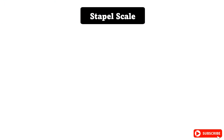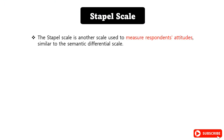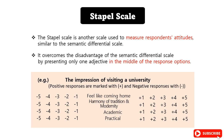The Staple Scale is another scale used to measure respondents' attitudes, similar to the Semantic Differential Scale. However, it overcomes the disadvantage of the Semantic Differential Scale by presenting only one adjective in the middle of the response options.